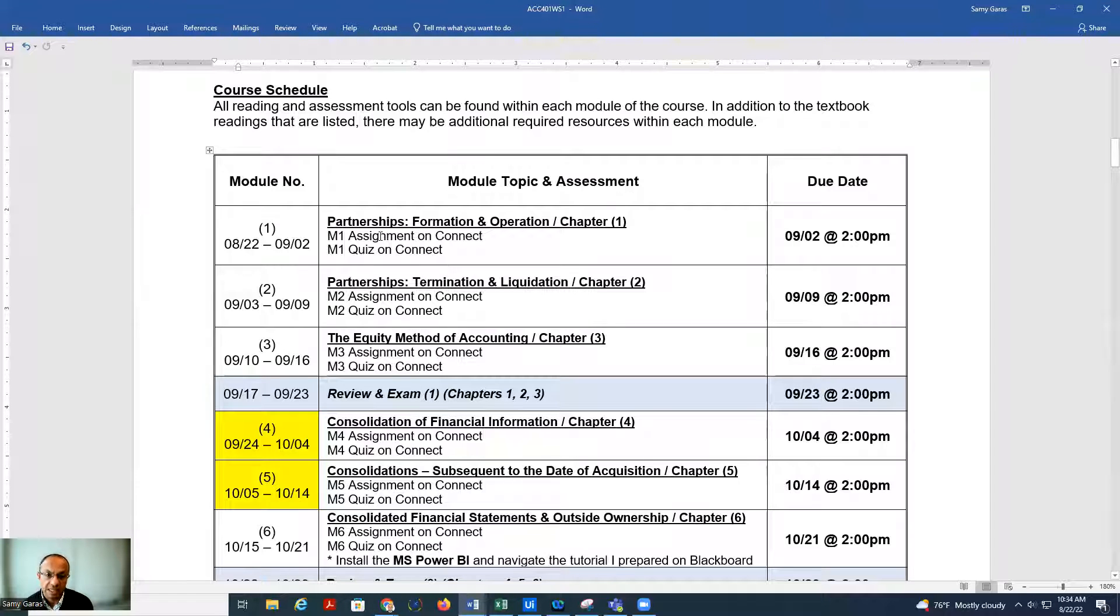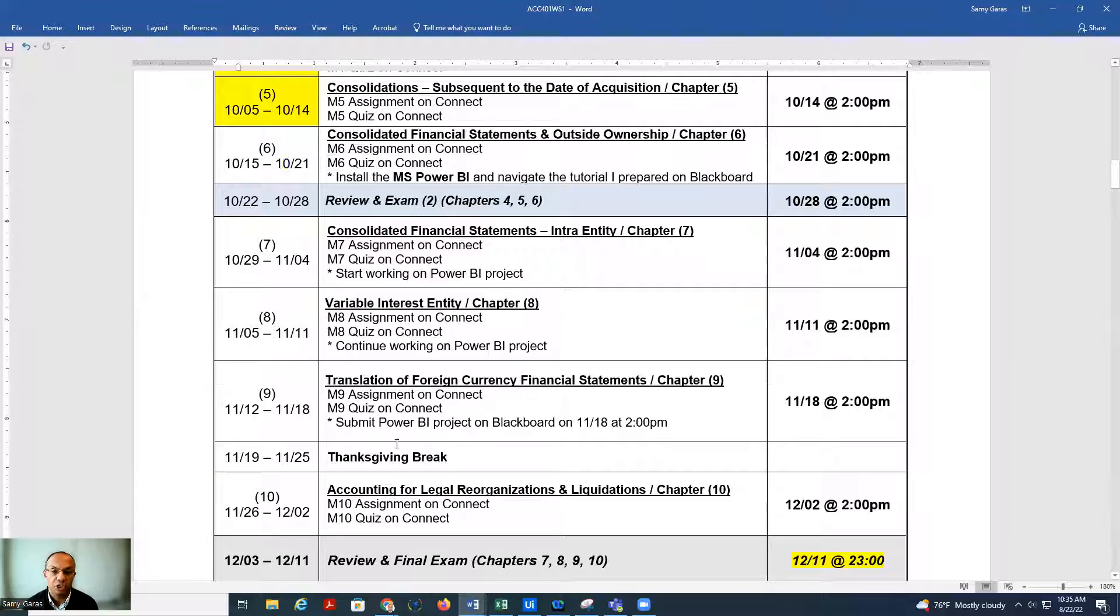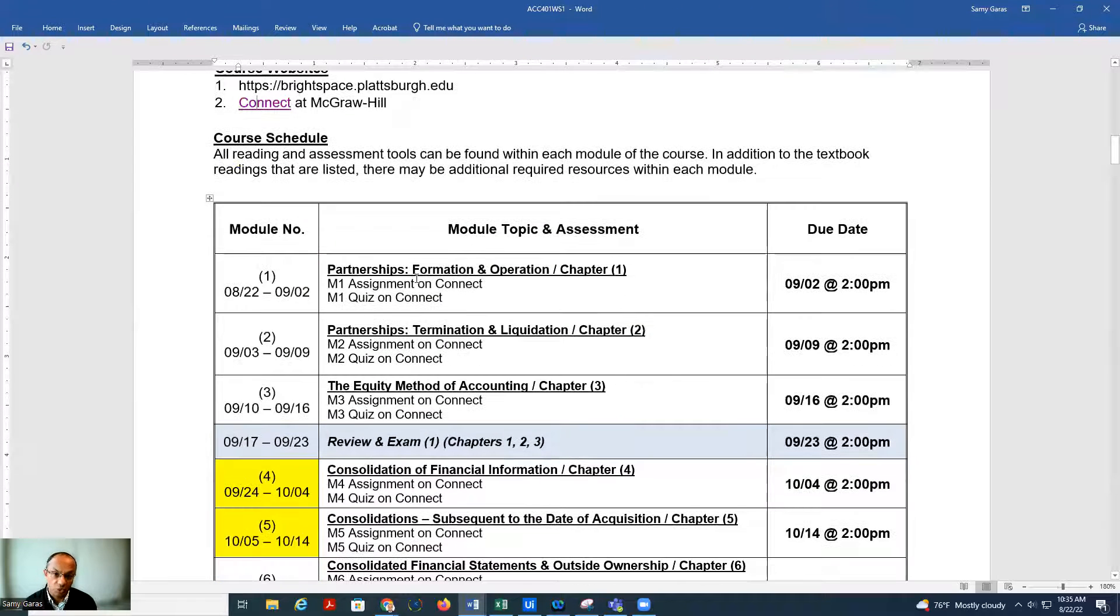Studying the assignments and the quiz will be very helpful because once we finish three chapters, then we have an exam on those chapters. Then we take another three chapters and get the second exam, and then four chapters and we get the final exam. The due date for submitting your assignment and quizzes is usually Friday at 2 p.m. If you're taking the accounting information system with me, you might see that the due date is the same, which is Friday at 2 p.m.